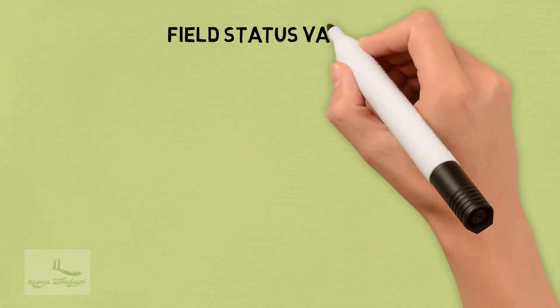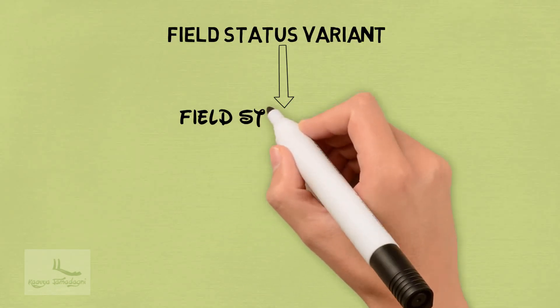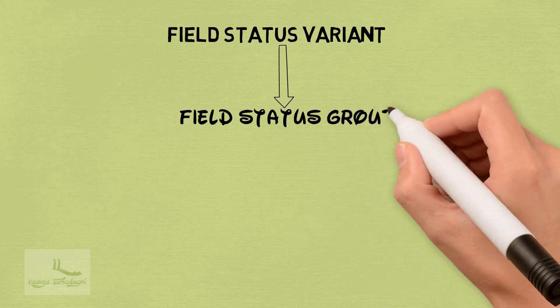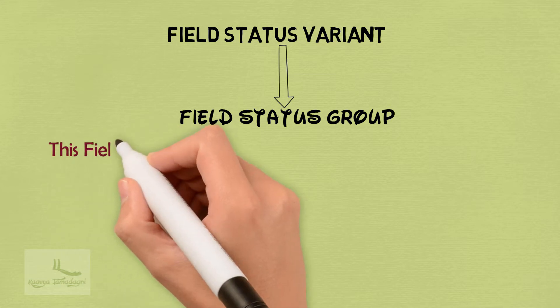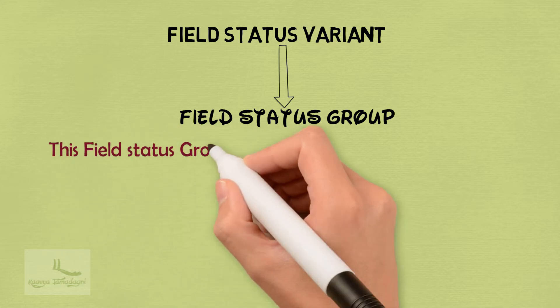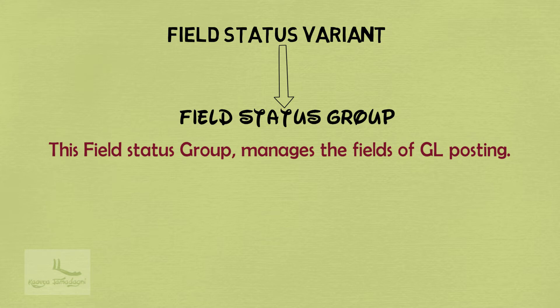The next concept we have is field status variant. The field status variant contains the field status group. This field status group manages the fields of GL posting. That means while doing the GL postings as an end user, there will be different fields, and those fields will be managed by this field status group.